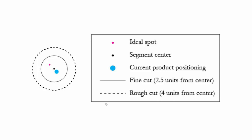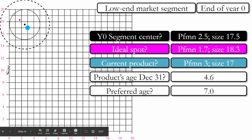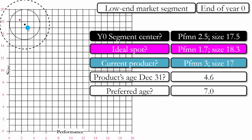Let's take a look at how this market segment moves over multiple years. In the slides that follow, a pink spot represents the ideal spot for the low-end market, a black dot represents the segment center, a blue dot represents the current product's positioning, a solid circle is the fine cut, and a dashed circle is the rough cut. At the end of year zero, our product is at performance 3 and size 17; the segment center is at performance 2.5 and size 17.5; and the ideal spot trails at performance 1.7 and size 18.3. The product's age is 4.7 and the preferred age is 7. We probably do not want to do an R&D project that would make our product worse and cut the age in half.